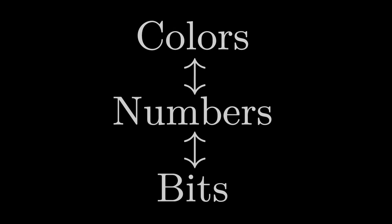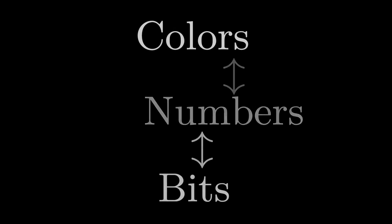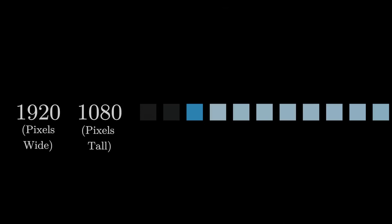Now that we have a way of representing colors, we can evoke the power of abstraction and instantly forget about how it works. On to pictures. Pictures are just grids of colors. The way we store them is by putting each grid cell, called a pixel, one after the other. Add in a couple numbers at the start telling us how many pixels wide and tall the final image is supposed to be, and we're done.